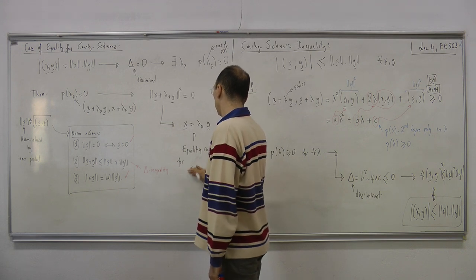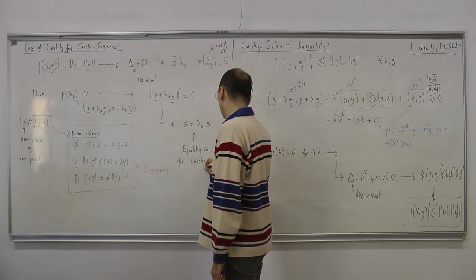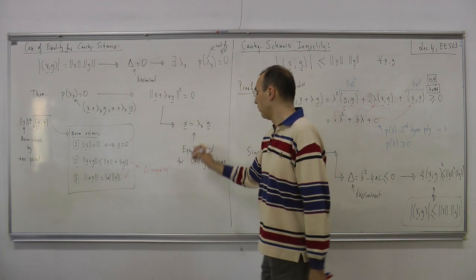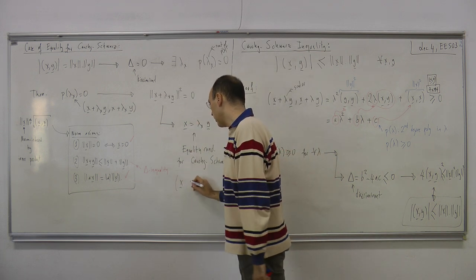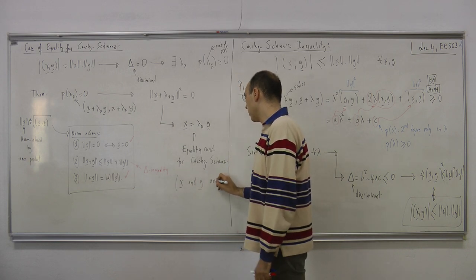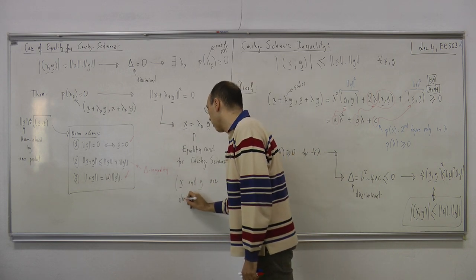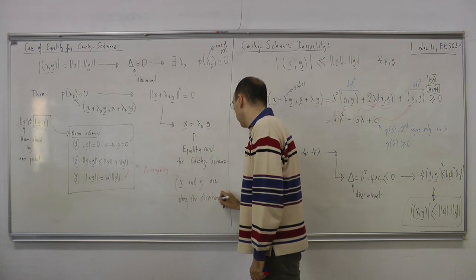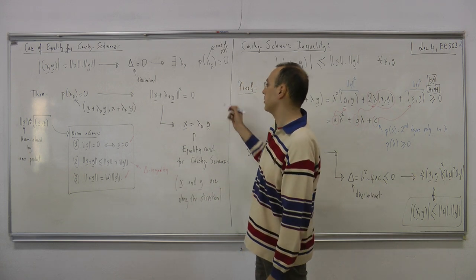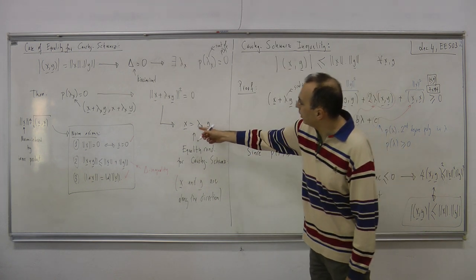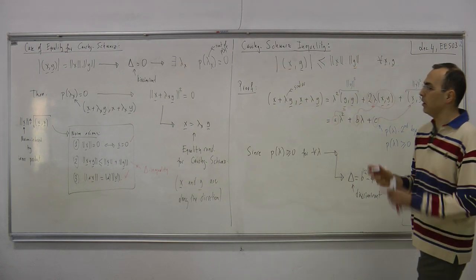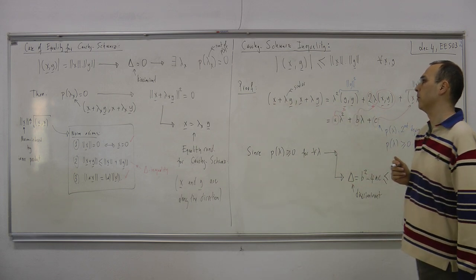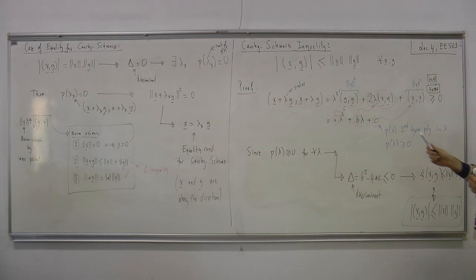This is the equality condition for Cauchy-Schwarz. Verbally, x and y are along the same direction — lambda is just a scalar, so if it's negative the vectors point opposite ways, but they remain collinear. That completes the Cauchy-Schwarz proof.